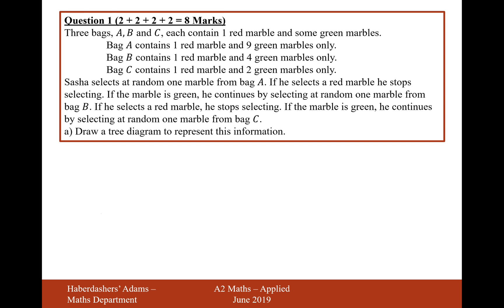The first choice will be green or red. The probability of pulling a red marble out would be one out of ten, and a green marble will be nine out of ten. If he selects a red marble, he stops, and if he selects a green marble, he moves on to bag B.